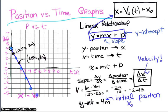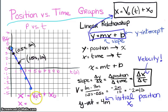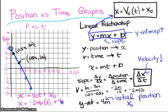So the velocity is negative 2 meters per second. For the equation for this specific object depicted in the graph: x equals v_initial times time plus x_initial, which we can write as x equals negative 2 meters per second times time plus 4 meters.